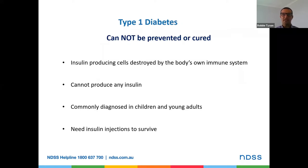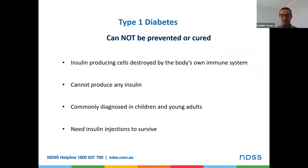Type 1 diabetes, on the other hand, cannot be prevented or cured. It's an autoimmune issue where the insulin-producing cells of the body are destroyed by the body's own immune system, so there isn't any insulin produced at all. It's commonly diagnosed in younger children and also in young adults. In order to survive, the insulin that isn't being produced by the pancreas needs to be replaced — so insulin injections four times a day or a pump would need to be initiated.